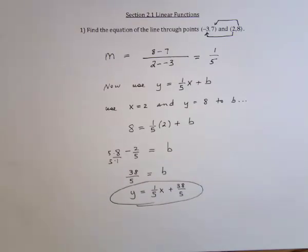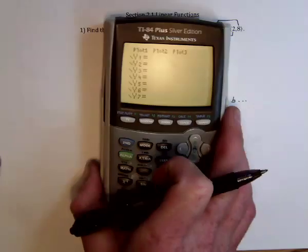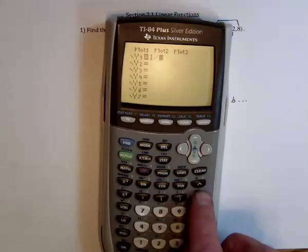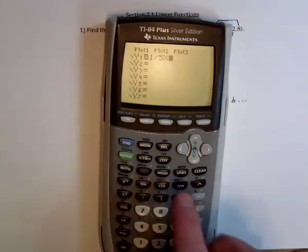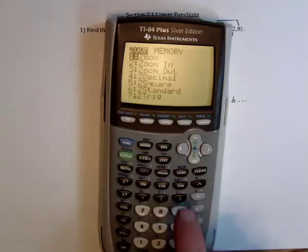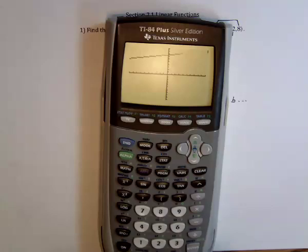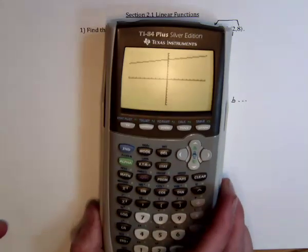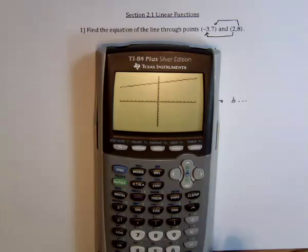The next thing I'm going to do is use the graphing calculator and graph that. So we've got y equals 1 fifth x plus 38 fifths. And then zoom standard to take a look at the graph. And there's our line. As I said earlier, it is going up, but not very rapidly. And now I just want to test and make sure that it works with these points, the original points given.